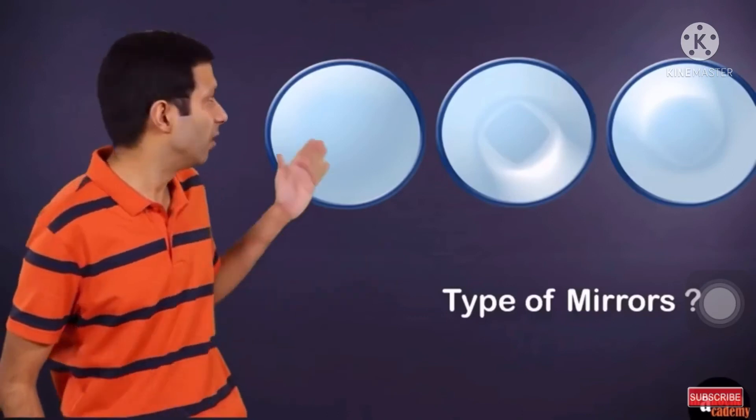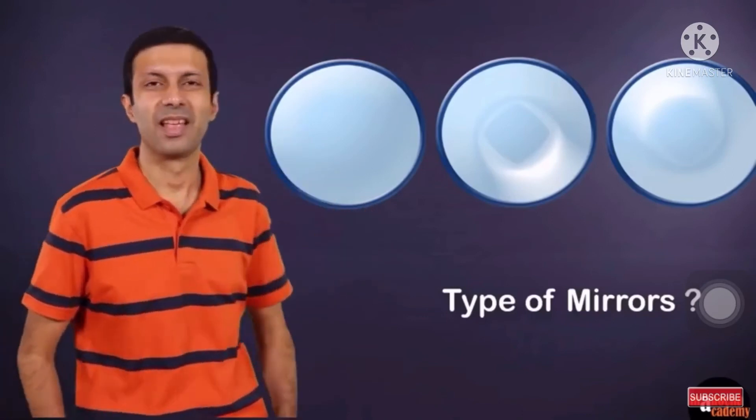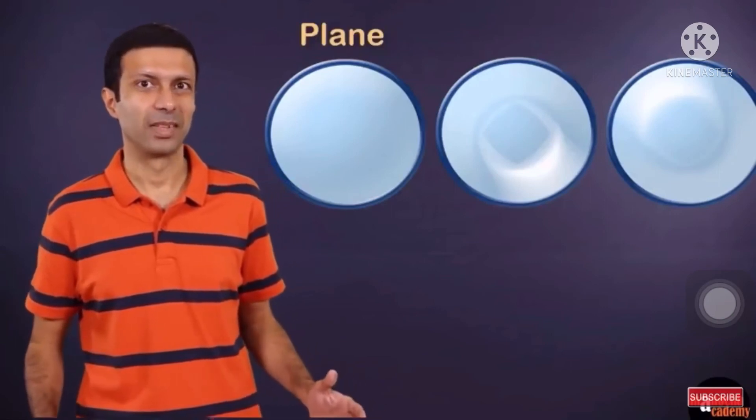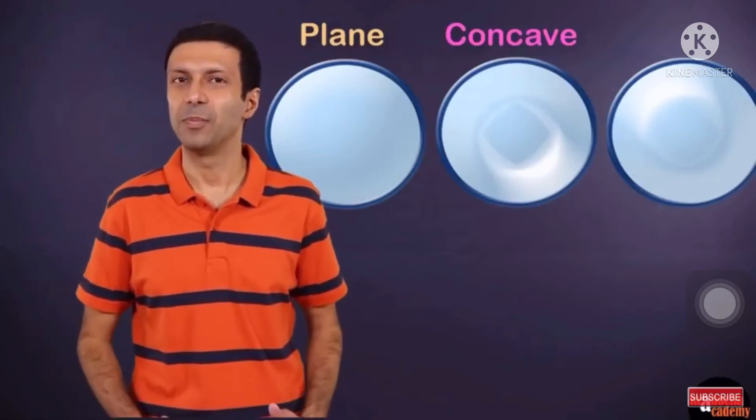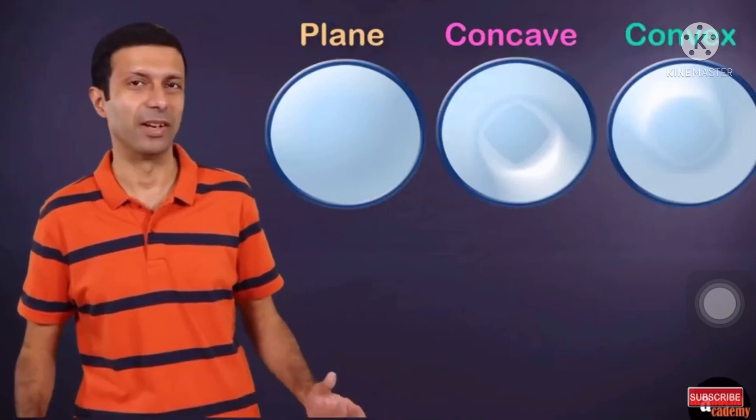Can you guess the type of mirror for each of these? That's right. The first mirror is a plane mirror, the second mirror is a concave mirror and the third mirror is a convex mirror. That's all for today, class. Bye-bye!